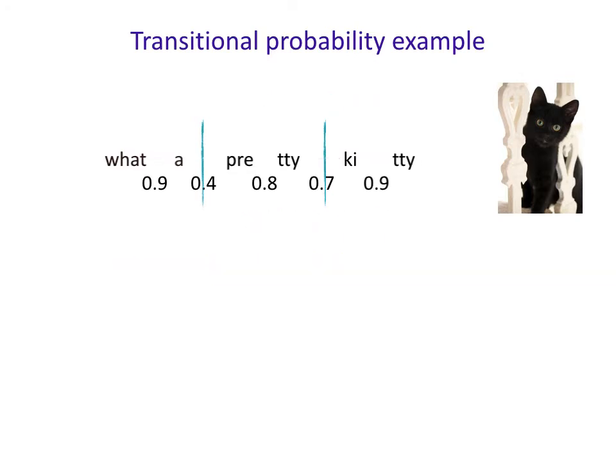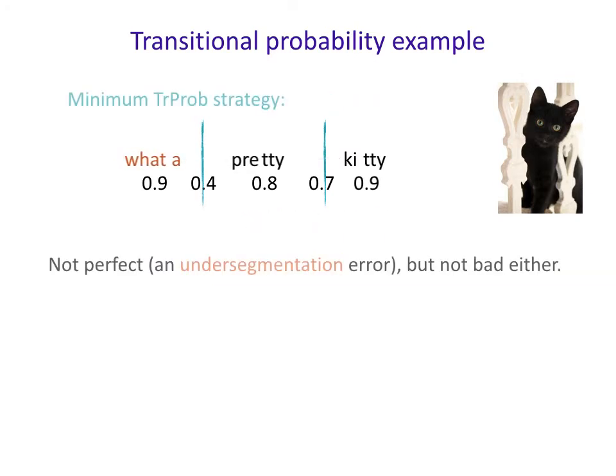So here's where you put your boundaries — what kind of segmentation do you get? A pretty good one. 'What' is not actually a word in this context, but 'pretty' is a word and 'kitty' is a word. So even though you have this under-segmentation error where you should have split them apart but didn't, you're still doing pretty well with a transitional probability minimum strategy.